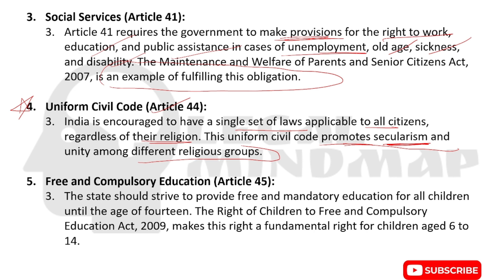On free and compulsory education: the state should strive to provide free and mandatory education for all children up to the age of 14. The Right of Children to Free and Compulsory Education Act 2009 makes this right a fundamental right for children aged 6 to 14.